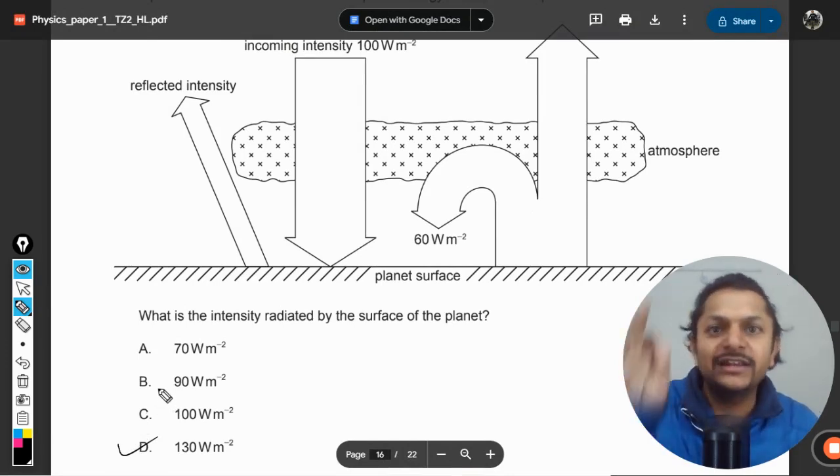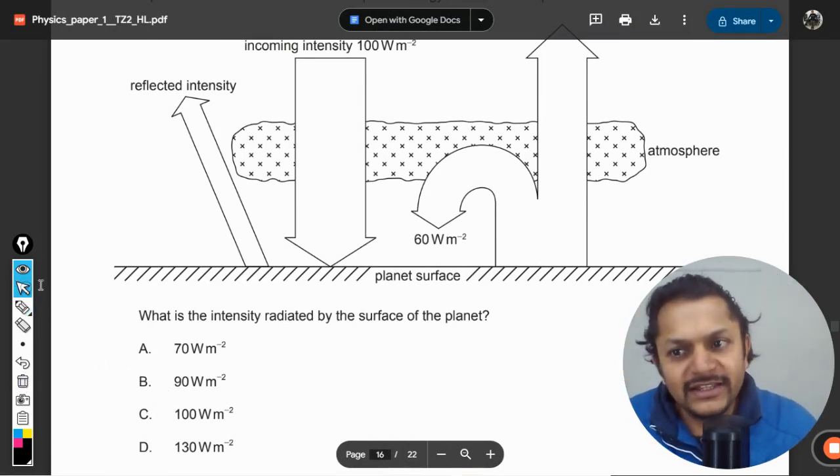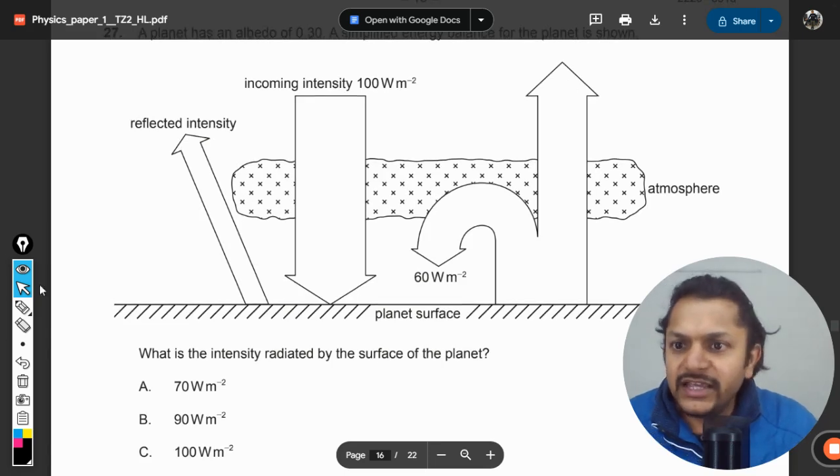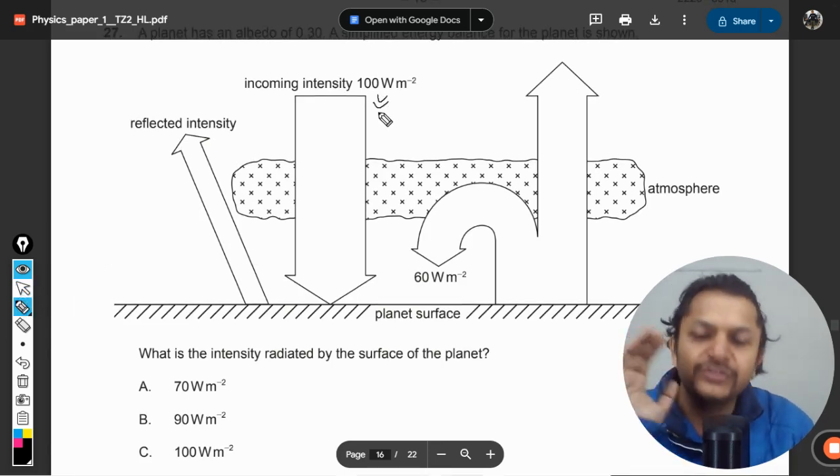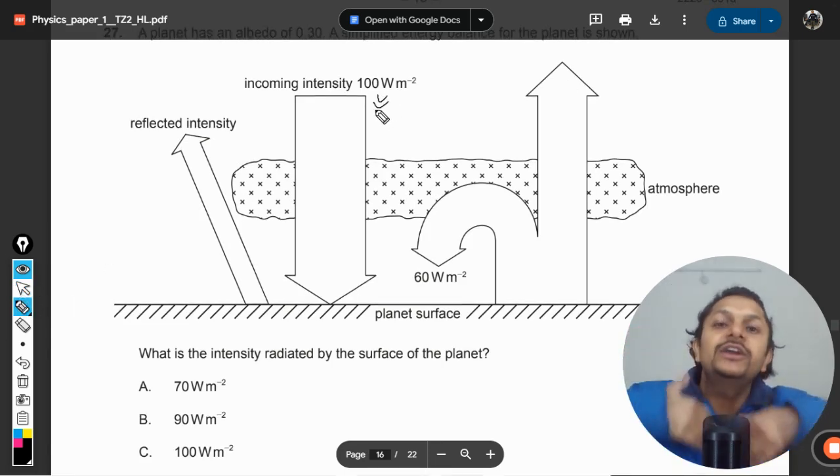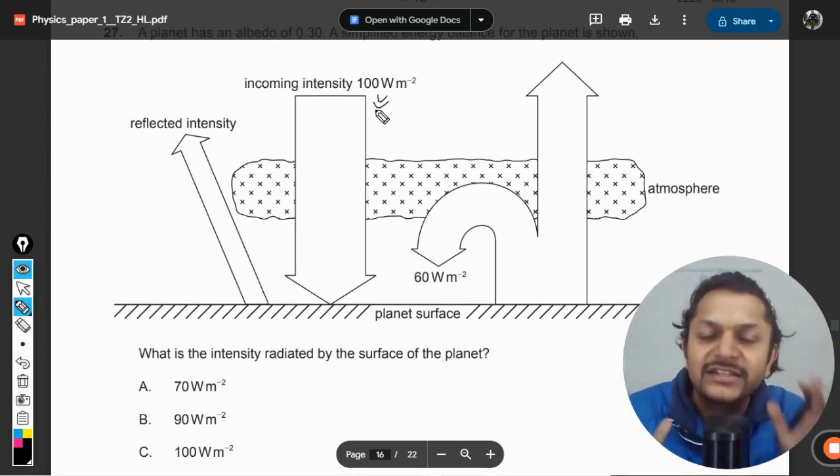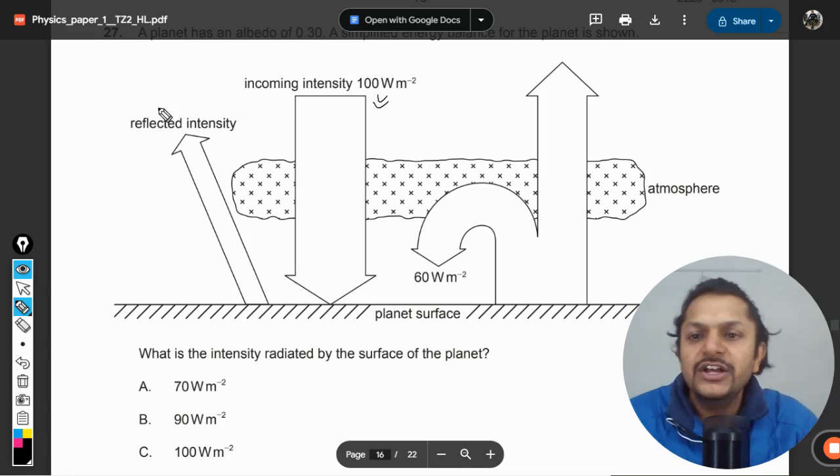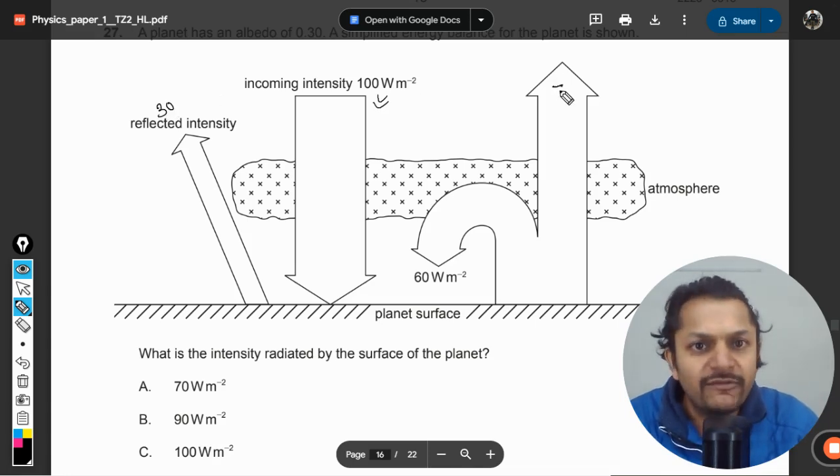What I did in this question: try to understand the energy which is coming to the surface of the Earth should be going away from the surface of the Earth. That is the limiting condition. So 30 is here, so 70 will be here. 60 is going this side, which clearly means that 130 should be the energy that is radiated.